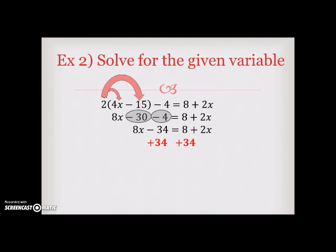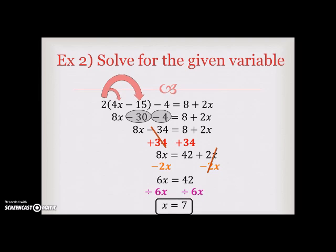Next, we're going to add 34 to both sides. So it will cancel on the left. And now this will be 8x is equal to 42 plus 2x. We still need that 2x on the other side of the equation. So now we do the inverse operation of addition which is subtraction. And we are going to subtract 2x from both sides. To now give us 6x is equal to 42. The last step here will be to divide by 6. And we will get x is equal to 7.